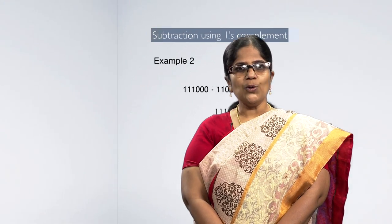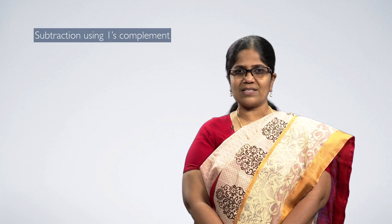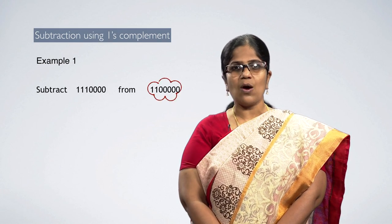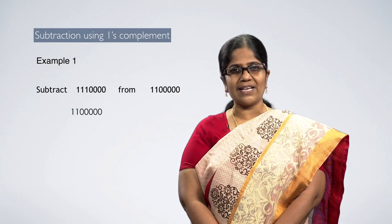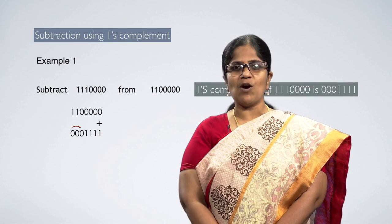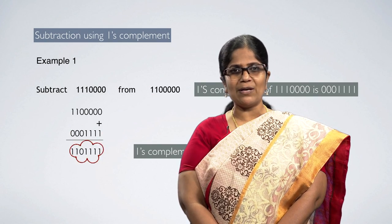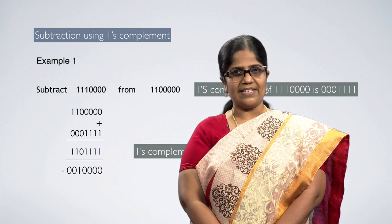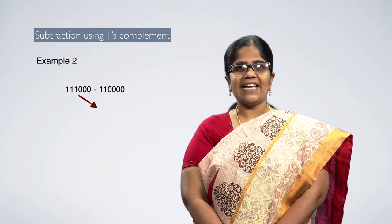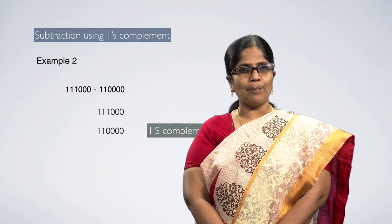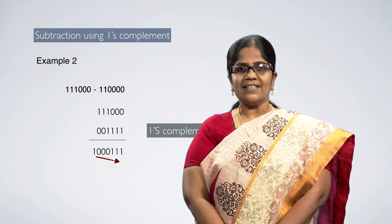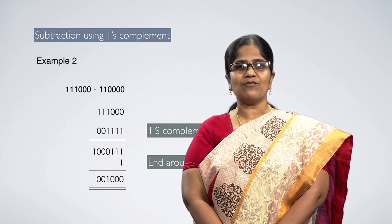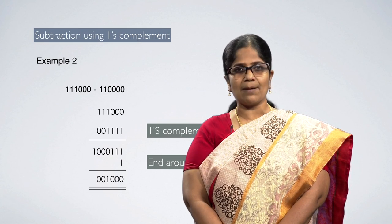We have seen subtraction using 1's complement method with two examples: one without carry — in that case, perform 1's complement once again on the result and add a negative sign; and one with carry — in that case, end-around carry operation is performed, meaning the carry is added again to the result to obtain the final result.